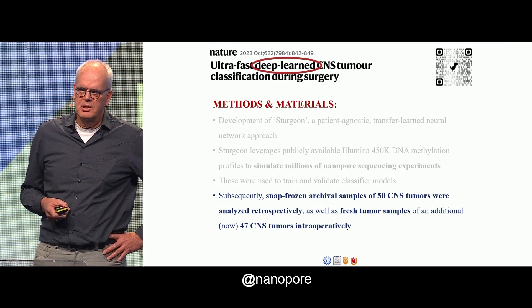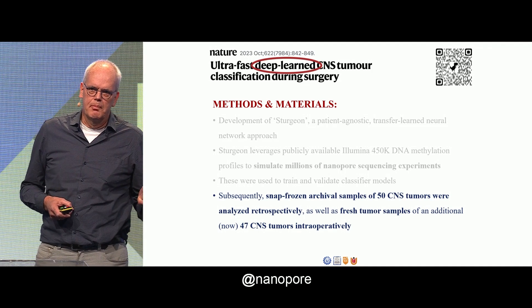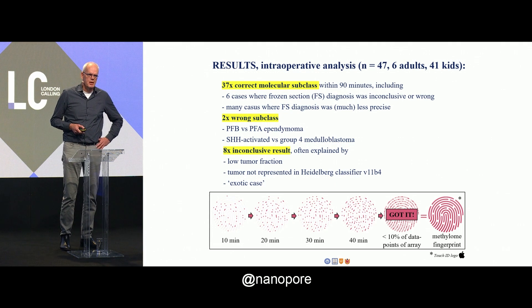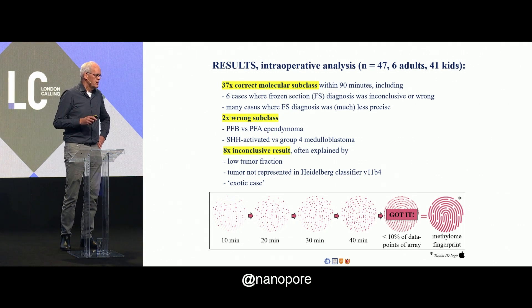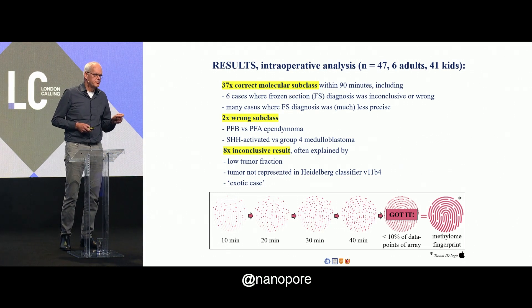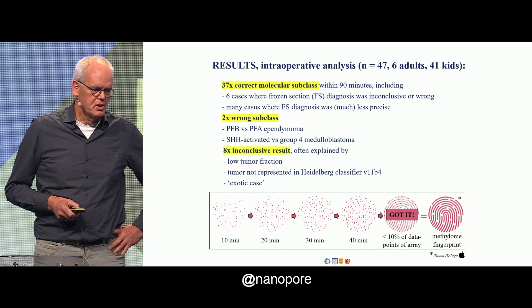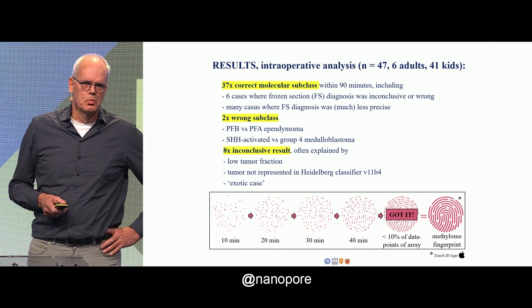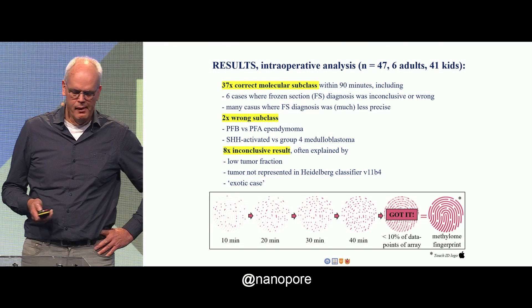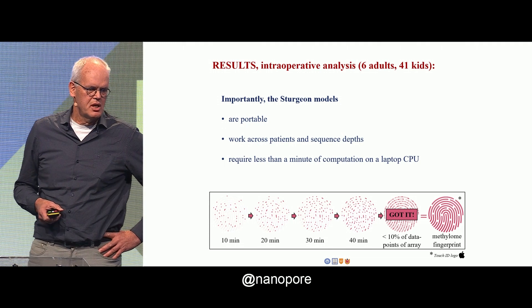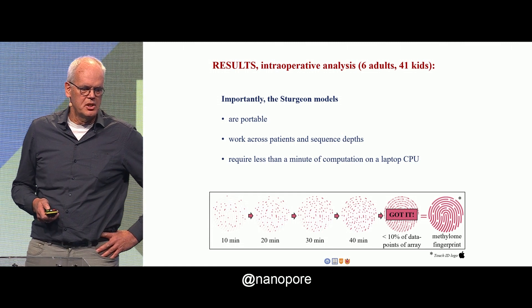We then applied that approach to archival snap-frozen samples and prospectively on fresh tumor samples. With regard to the prospective part, most of the time the approach was correct — it hit the nail on the head with regard to the diagnosis. Sometimes it was a little bit off, wrong subclass within a tumor type, and sometimes there was an inconclusive result, but most of the time that could be very well explained by low tumor cell percentage. The Sturgeon models are portable, work across patients and sequence depth, and require less than a minute of computation on a laptop CPU.